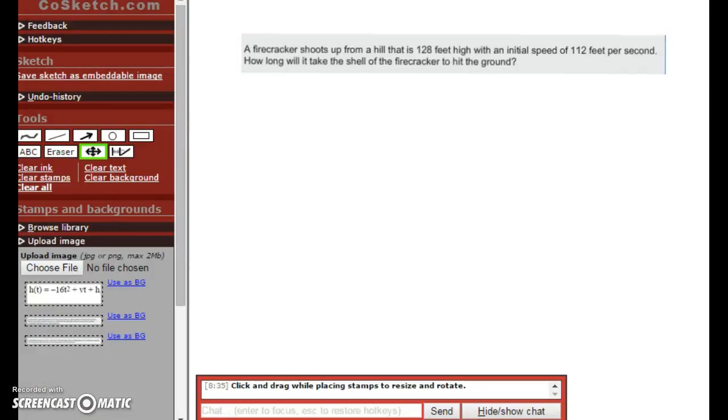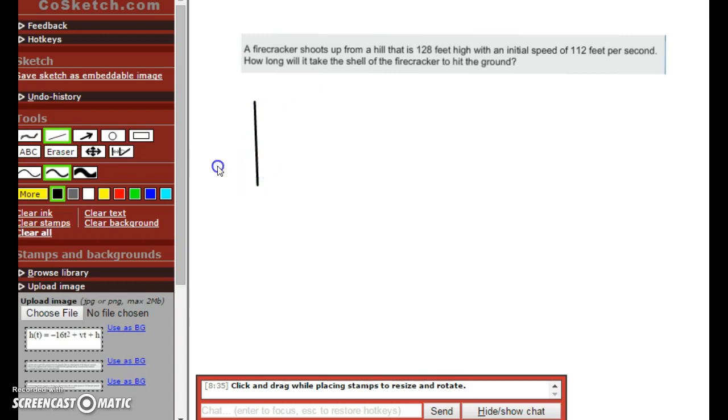I'm going to pause and get another problem. Okay, now we're talking about a firecracker. It shoots up from a hill that's 128 feet high with an initial speed of 112 feet per second. How long will it take for the shell of the firecracker to hit the ground? So, as always, I always draw a picture so I can see what's happening.